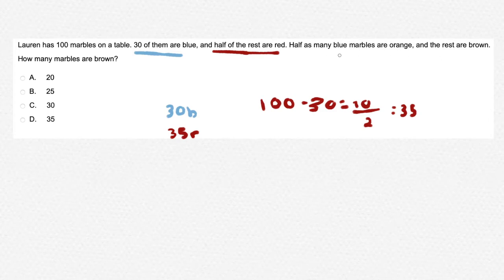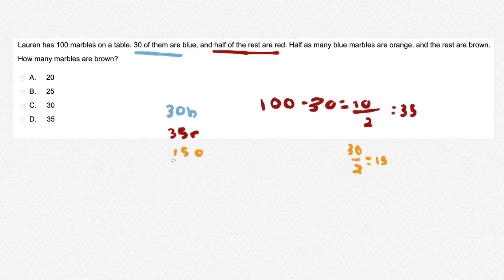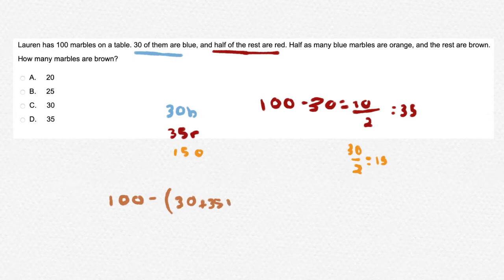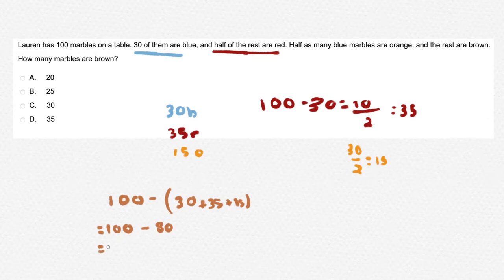Continuing the question: half as many blue marbles are orange. We know there are 30 blue marbles, so we divide by 2, which gives a value of 15 — there are 15 orange marbles. Then it says the rest are brown. Out of the hundred marbles, the value of brown marbles would be 100 minus 30 blue, minus 35 red, minus 15 orange. That gives 100 minus 80, leaving the final answer of 20. There are 20 brown balls.